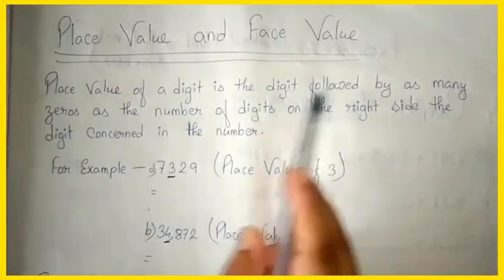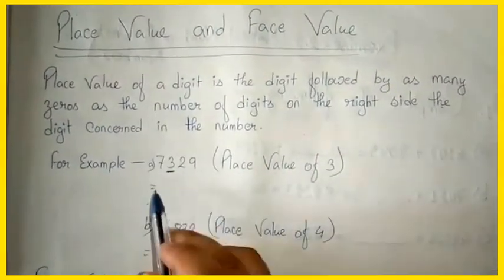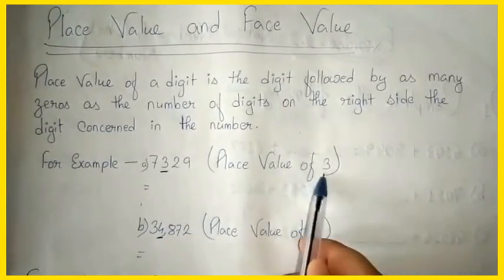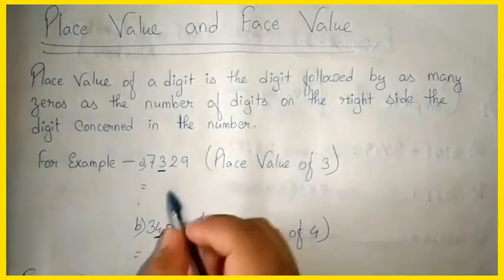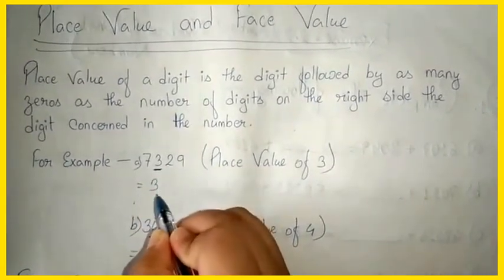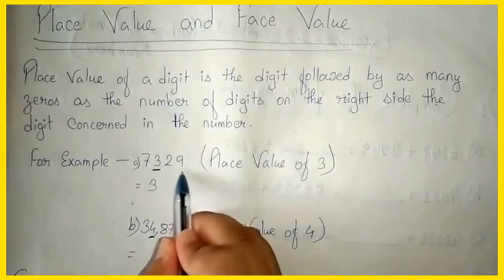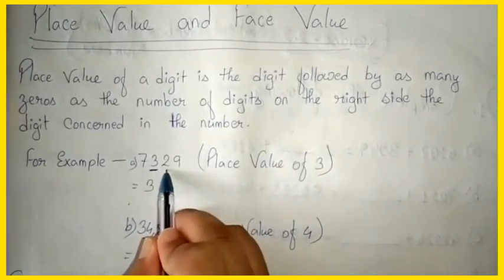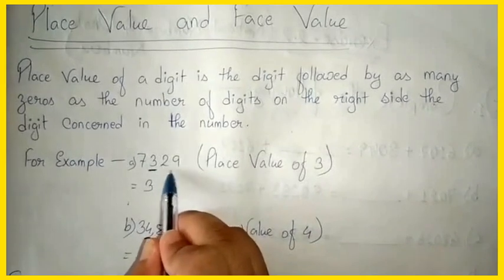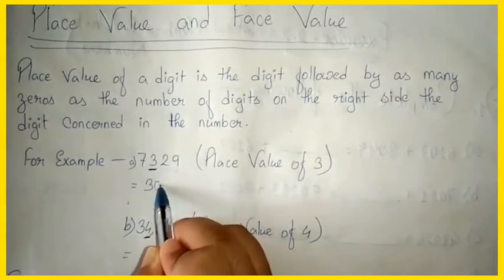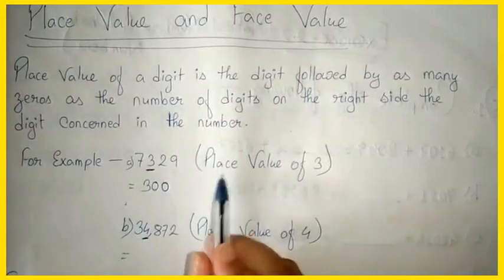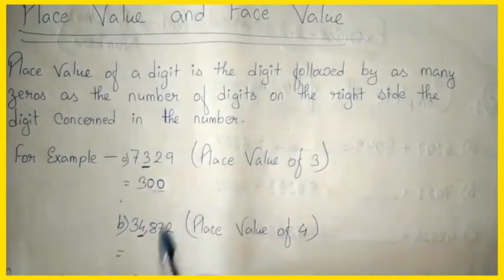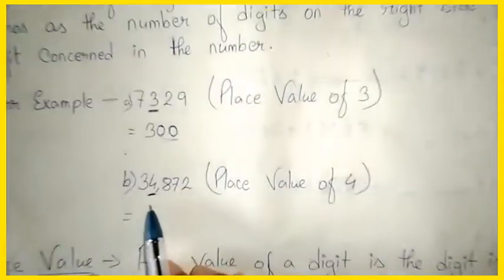For example, consider 7329. We have to find the place value of 3. First we write down 3, then we count how many digits come after 3 — there are two digits. So we add two zeros, giving us 300. The place value of 3 in 7329 is 300.